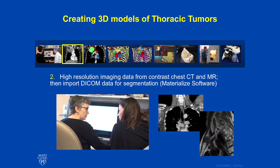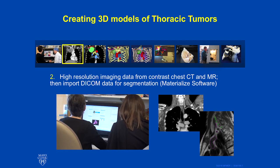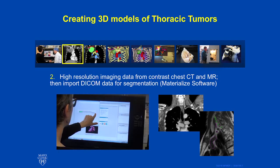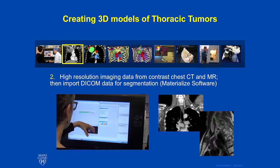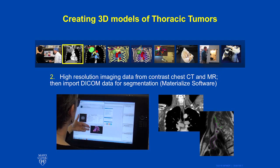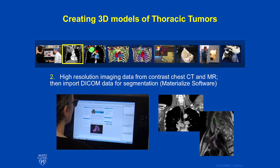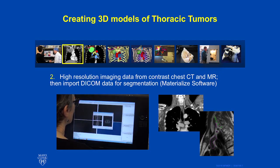Materialize is the software we use to import the DICOM images from a scan. Thinner cuts on a CT scan will make a higher resolution model. Contrast allows structures like arteries and veins to be mapped with greater precision. Using the Materialize software system, we are able to select different DICOM images — some from MRI and some from CT — to create our final model.